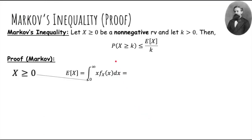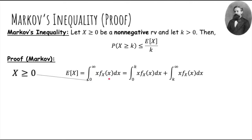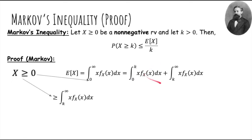Let's prove Markov's inequality. Starting with the expected value of x, we apply the definition of expectation. Since x is non-negative, we integrate from 0 to infinity of x times the density at x. We split the integral into two parts: one from 0 to k, the other from k to infinity. Because x is non-negative and densities are also non-negative, the left term is non-negative. So if we remove it, that only makes the sum smaller.